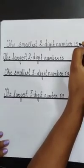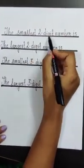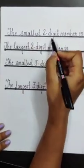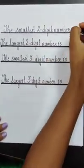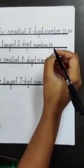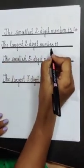Now let me ask you a few questions. Tell me, which is the smallest 2-digit number? Yes, the smallest 2-digit number is 10.